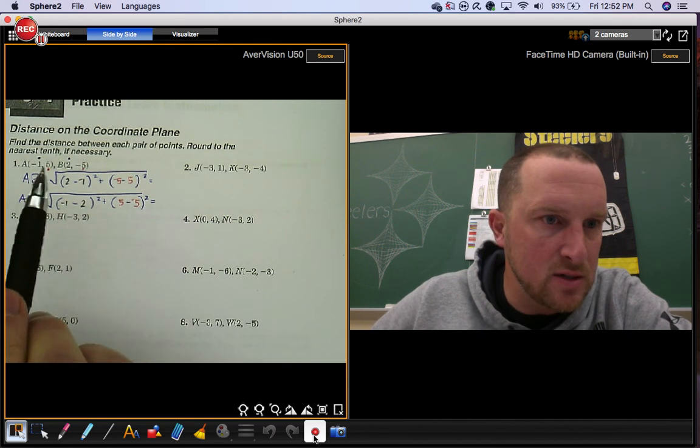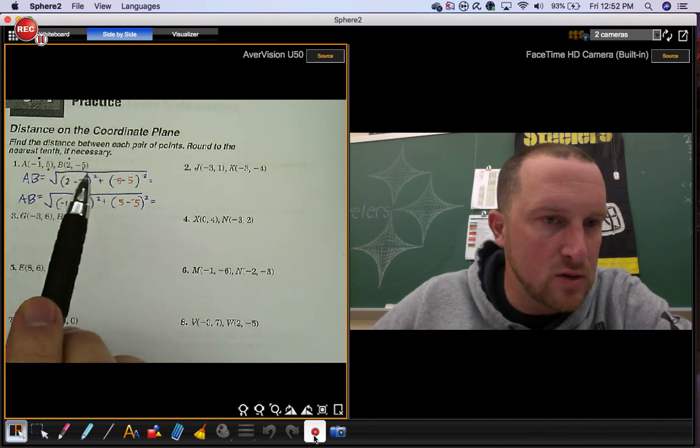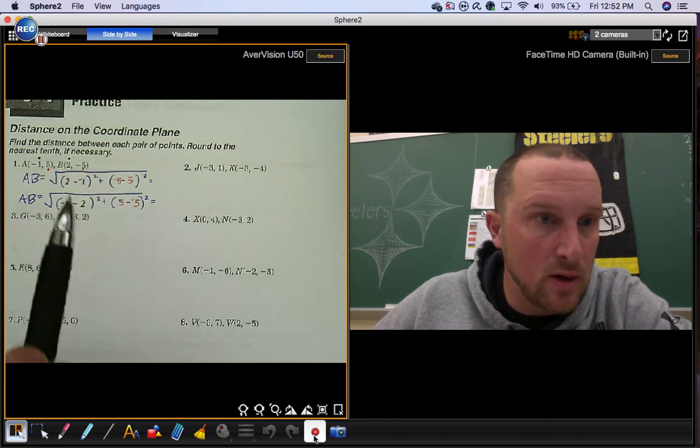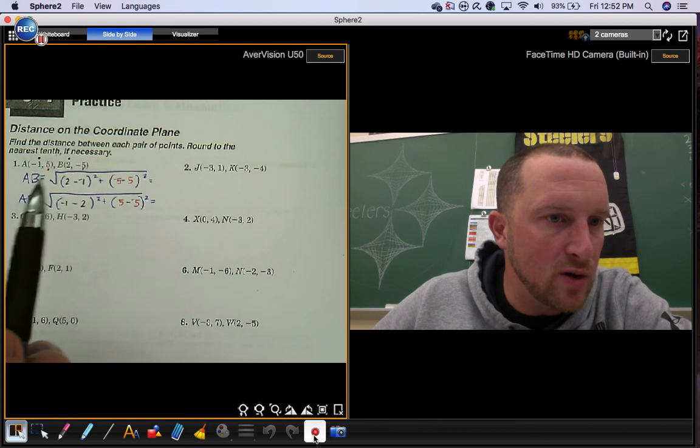So remember, distance formula means subtract your x's, square them, subtract your y's, square them, then add them and take the square root. That'll tell you how far apart these two points are, a to b.